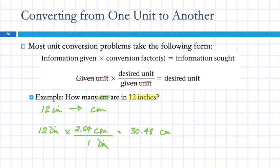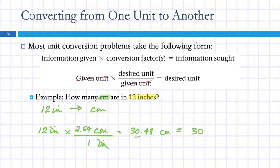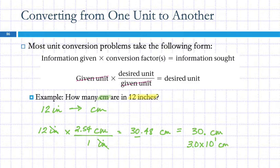We should always consider significant figures. How many sig figs should the answer have? 12 inches is 2 sig figs, 2.54 is 3 sig figs — so the answer has 2 sig figs. Writing 30 is ambiguous because the zero is ambiguous; you can put a decimal point to indicate it's significant, giving 30. The best way is scientific notation. This gives the result as 3.0 × 10¹ centimeters.